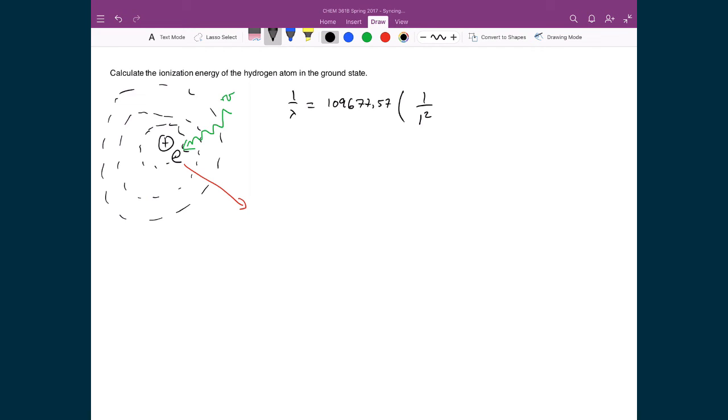And because we're ejecting it, that means we're taking the electron and we're moving it infinitely far away from the nucleus. And so we're going to use 1 over infinity squared, meaning that we're moving it to something very far away. It's a very large orbit, so large, in fact, that it basically doesn't associate with the nucleus anymore. And so because 1 over a very large number is equal to 0, then we can get rid of that term altogether.